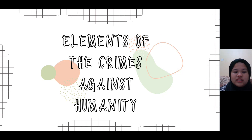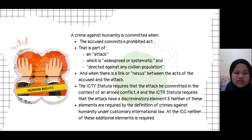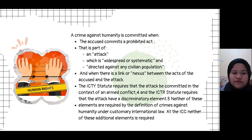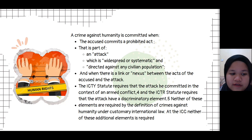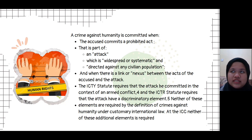So what are the elements of crimes against humanity? A crime against humanity is committed when the accused: first, commits a prohibited act; second, that act is part of an attack which is widespread or systematic; and third, directed against any civilian population. Additionally, there must be a link between the acts of the accused and the attack.